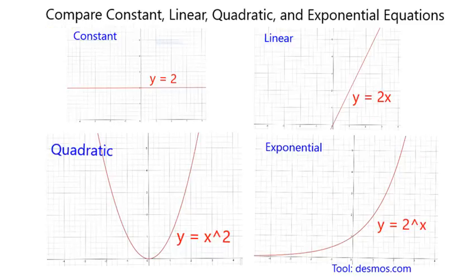So now I will just leave you briefly with a view where you can compare all of them at once. The constant is a type of linear, but it's a very special one where we just have a straight horizontal line. We have the linear, in this case, we have a line with a slope of 2.